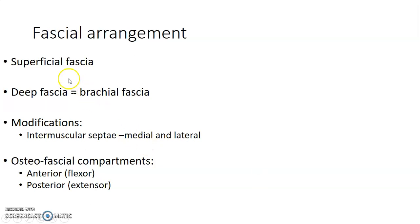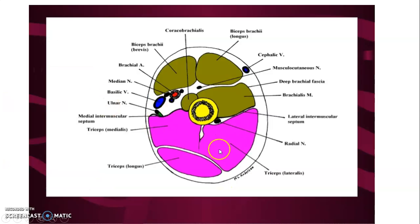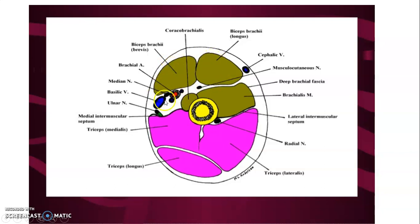Now we go to the fascia. Starting from the skin, you get to the superficial fascia, then the deep fascia. The deep fascia of the arm is the brachial fascia. Its modifications include the medial and lateral intermuscular septa, which together with the bone compartmentalize the arm into the anterior flexor compartment and the posterior extensor compartment. The extensor compartment contains the three-headed triceps brachii, and the anterior compartment contains brachialis, coracobrachialis, and the two heads of biceps brachii.